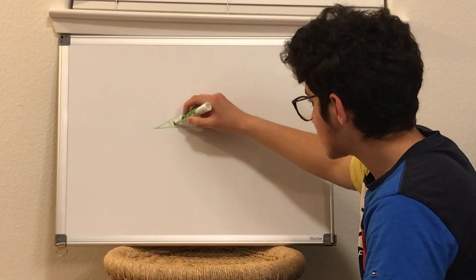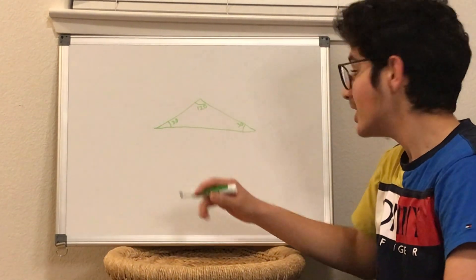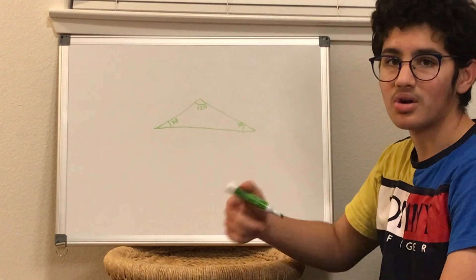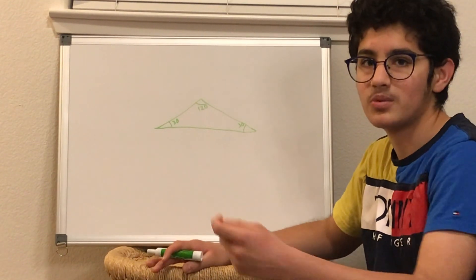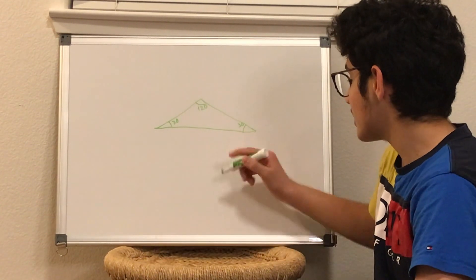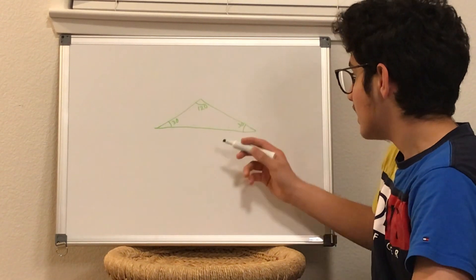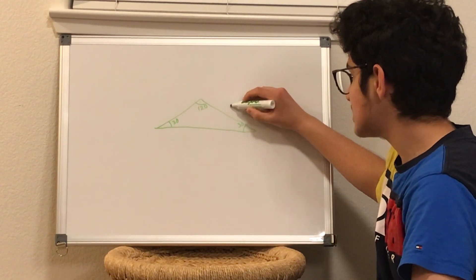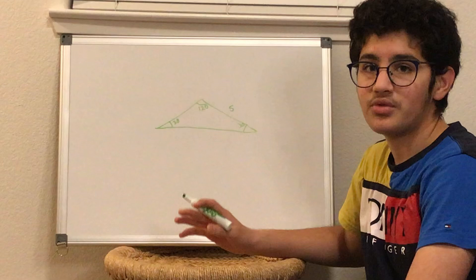This is known as an isosceles triangle when two sides are equal. This is our triangle and let's say that we're just given that one of these sides is S and now we need to find the area of the triangle.